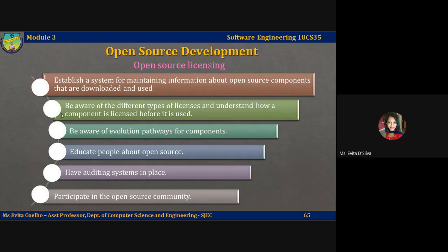Second, be aware of the different types of licenses and understand how a component is licensed before it is used. You may decide to use a component in one system but not another, because you plan to use these systems in different ways. Third, be aware of evolution pathways for components. You need to know about the open source project where components were developed in order to understand how the code might change in the future.